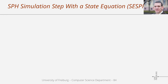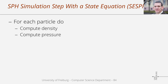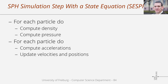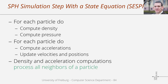In a state equation SPH solver, abbreviated SE-SPH, we iterate two times over all particles. In the first iteration we compute density and pressure, and in the second loop we compute the accelerations and advect the particles. For the density computation and the accelerations we use SPH approximations, which means these computations process all neighbors of all particles.